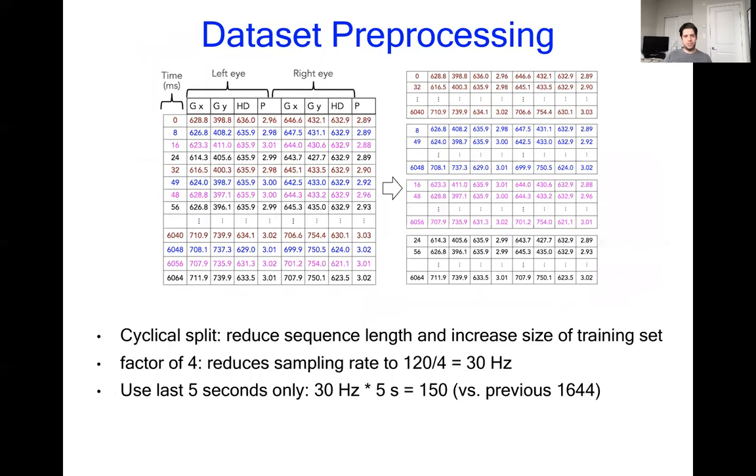So we address both of these concerns by what we're calling a cyclical split, which is simply downsampling, except that we don't discard the downsampled rows and instead use those rows for additional data points.